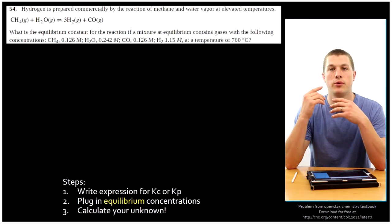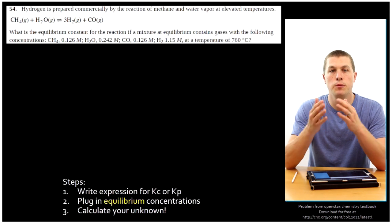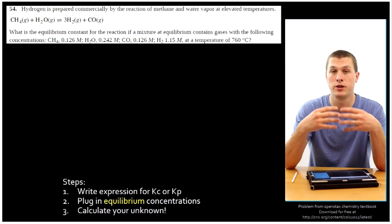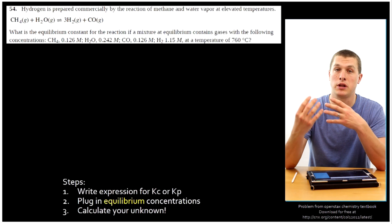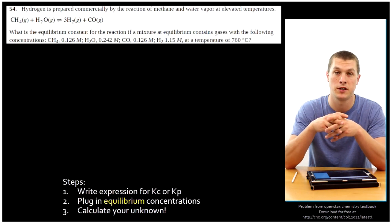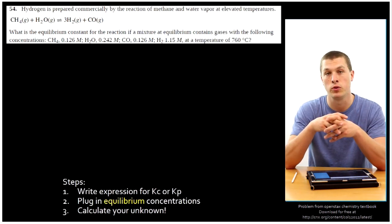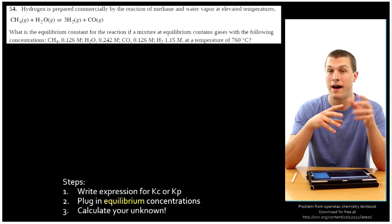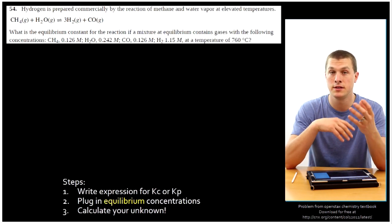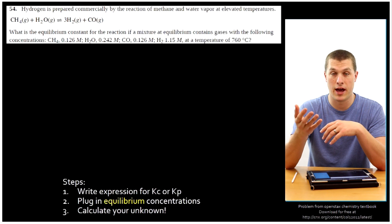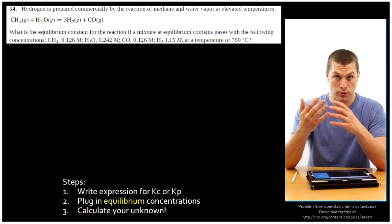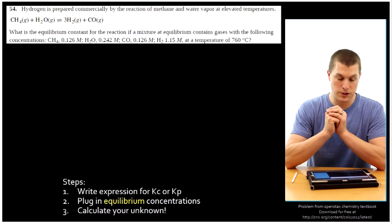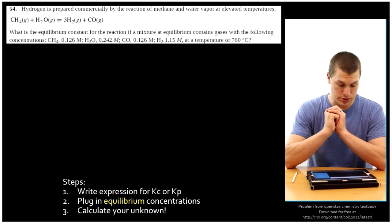In this video, we're going to calculate the equilibrium constant from equilibrium concentrations. The idea is our reaction has run forward to the point where we're at equilibrium, and if we have those concentrations, we can just plug them into our equilibrium expression and calculate our equilibrium constant. We'll also look at a calculation where we have the equilibrium constant and most concentrations but need to solve for one unknown. These problems are from the OpenStax chemistry textbook.